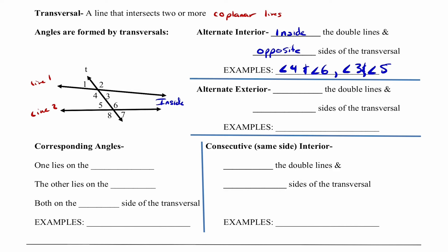Alternate exterior angles are going to be on the outside of the double lines, and they're going to be on the opposite sides of the transversal. In this case, we would talk about angle one and angle seven, and also angle two and angle eight.